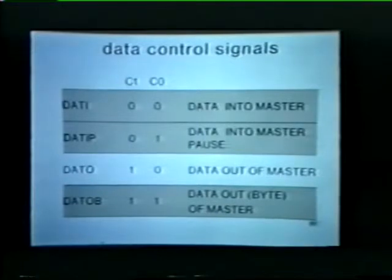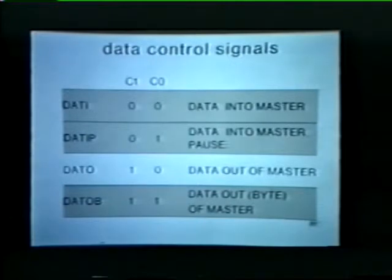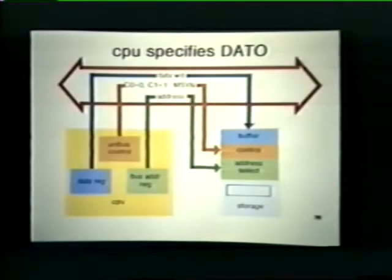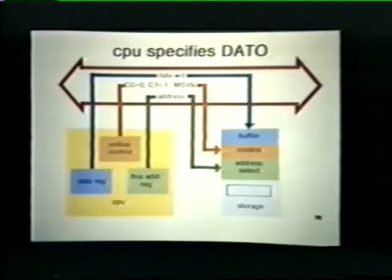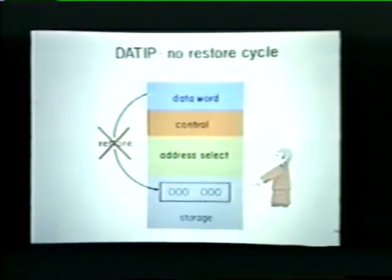Now let's look at memory. A master device specifies a data O transfer if it wishes to store or write a full word into an addressed memory location. During a data O transfer, the processor places a data word on the bus along with an address indicating where that data word is to be stored. The processor also clears the C0 line, asserts the C1 line, and issues its master sync signal. If core memory has been addressed, the memory unit first performs a read operation in order to clear the addressed memory location.